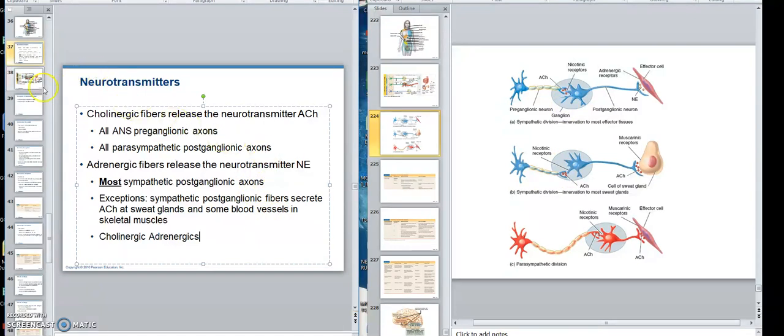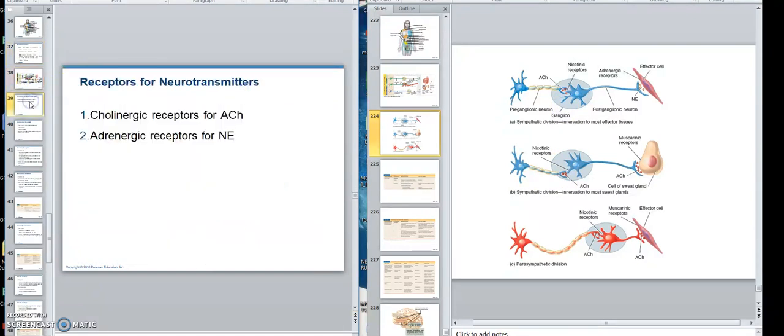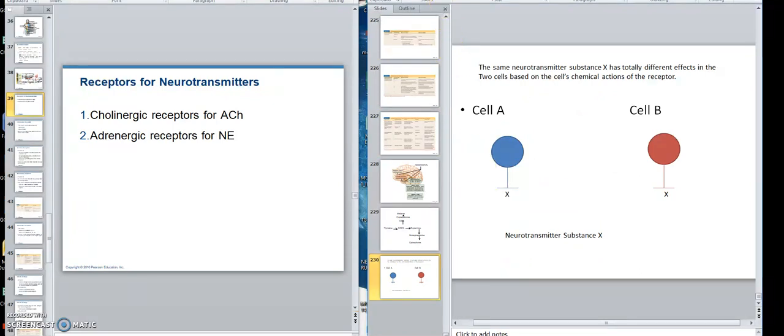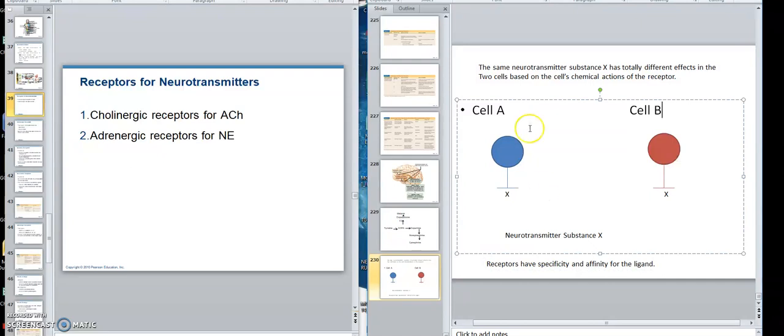Now, we go a little further. Before we introduce receptors, if you may recall, receptors have specificity and affinity for the ligand. A ligand is any substance that can bond to a receptor. So they have specificity for the molecular shape and affinity.